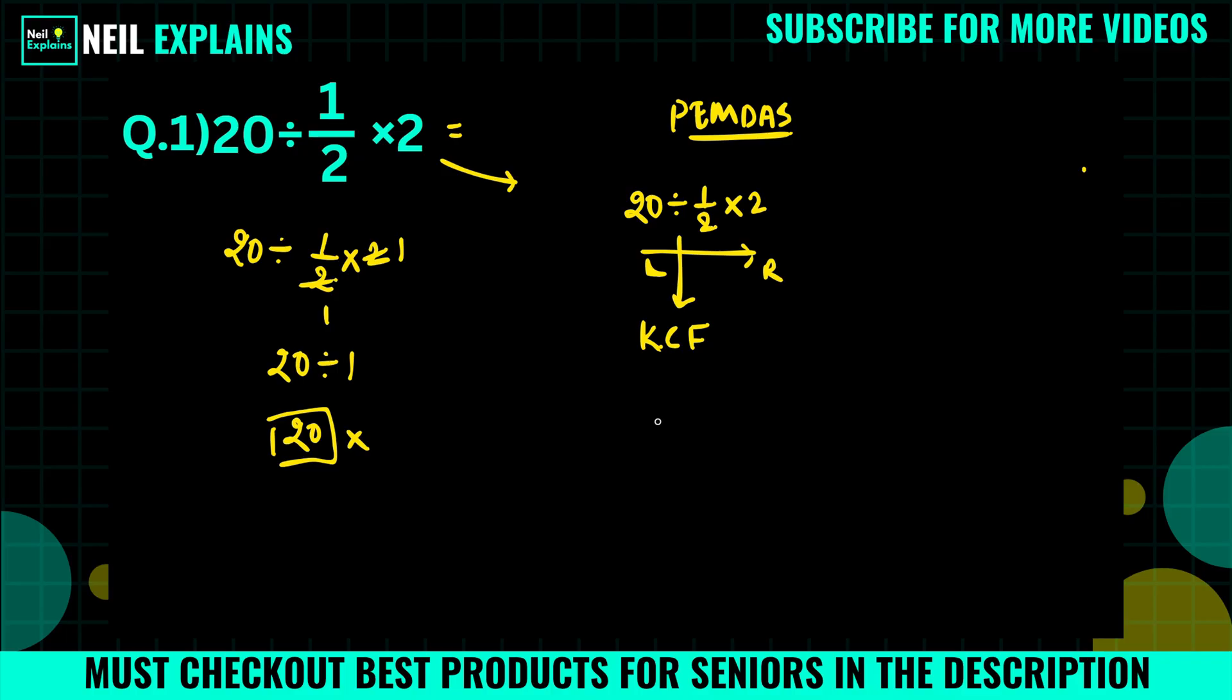We will keep this 20 as it is. Then change division into multiplication. And flip this 1/2 into 2/1. Now times 2.